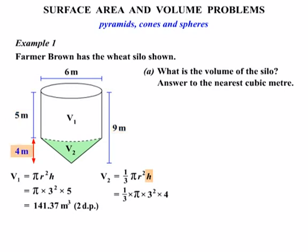So let's times by 4 on the end. Now working that out, 1 third times pi times 3 squared times 4, and we get 37.70 m³.